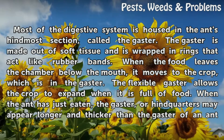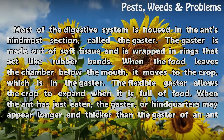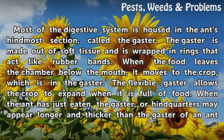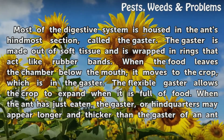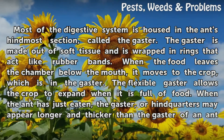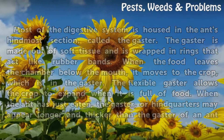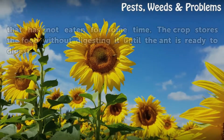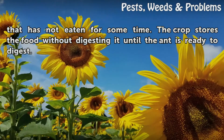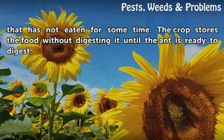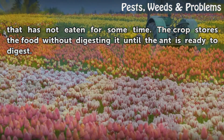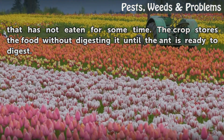The flexible gaster allows the crop to expand when it is full of food. When the ant has just eaten, the gaster or hindquarters may appear longer and thicker than the gaster of an ant that has not eaten for some time. The crop stores the food without digesting it until the ant is ready to digest.